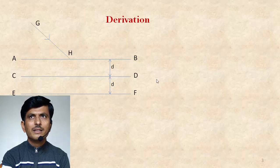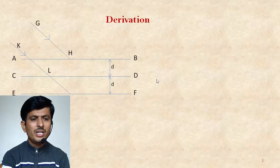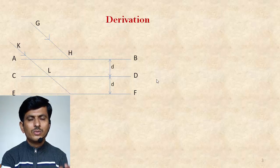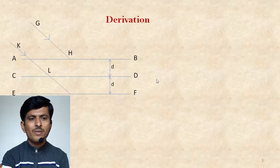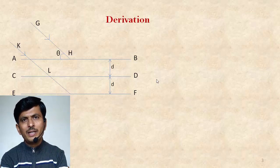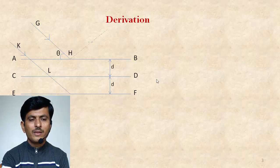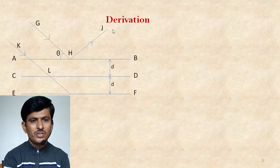Now consider the two homogeneous X-rays represented by GH and KL. These are the two homogeneous X-rays of wavelength lambda, and these X-rays incident on the plane making an angle theta. Now, when the ray GH strikes the surface with an angle theta, some of its path is reflected along the path HJ.